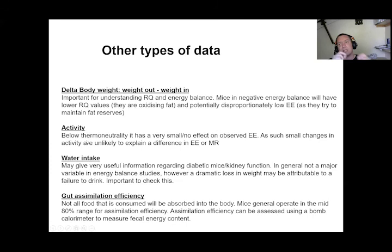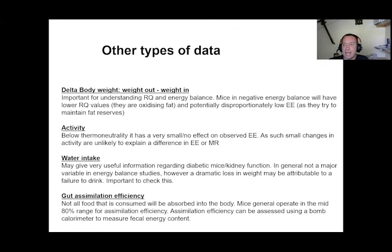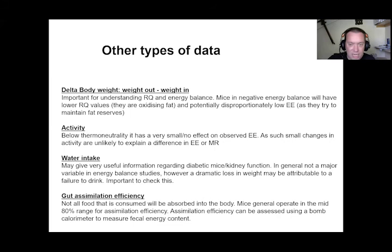Activity is slightly problematic because it makes up a really quite small component of the mouse's energy budget, particularly below thermoneutrality, so small changes in activity are very unlikely to explain significant differences in energy expenditure in groups of eight mice. If you have hundreds of mice you may be able to detect differences in activity. Large differences — such as circling from ear problems or running wheels — can affect energy expenditure, but beam-break activity measures in standard cages generally have a pretty low impact.